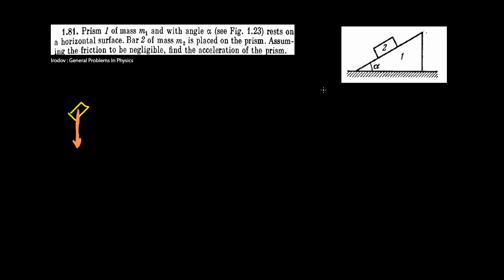I'm going to draw the forces in orange. So there's of course the gravity, the gravitational force. And we also know that this angle here is alpha. There is also a normal force from the prism — I'll call that N. And I don't think anything else is there.